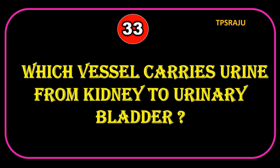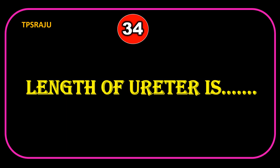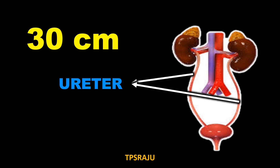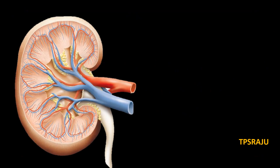Which vessel carries urine from the kidney to the urinary bladder? Ureter. Length of ureter is 30 cm. Collecting tubules in the kidney form pyramids and calyces, which open into the pelvis.